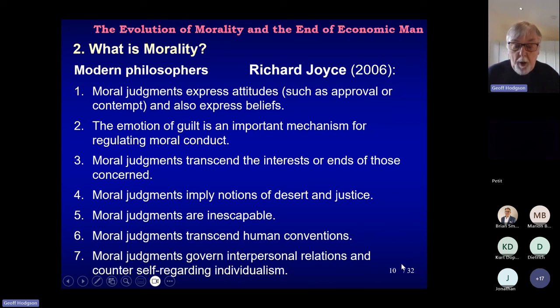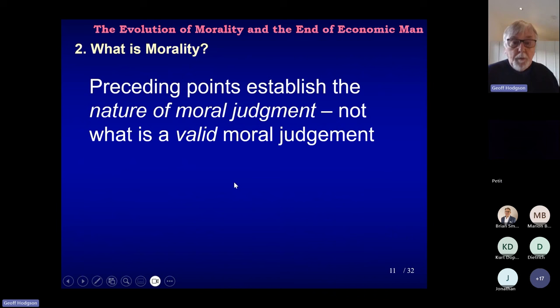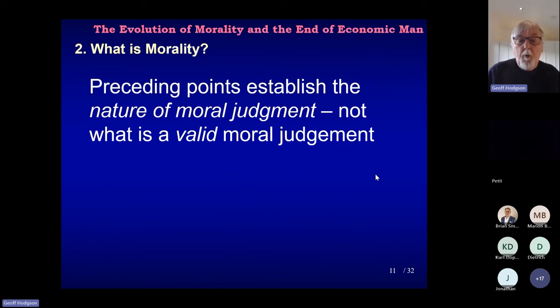I quote with approval the work David Sloan Wilson has done on this, particularly Darwin's Cathedral and other publications, where David shows by looking at religion in particular that moral codes have this particular strong function. The preceding points are about the nature of a moral judgement, not what is a valid moral judgement — so this is in the realm of descriptive ethics rather than normative ethics. I'm not trying to say normatively what an ethical system should be; I'm simply trying to distinguish at this point between what is and what is not a moral judgement.